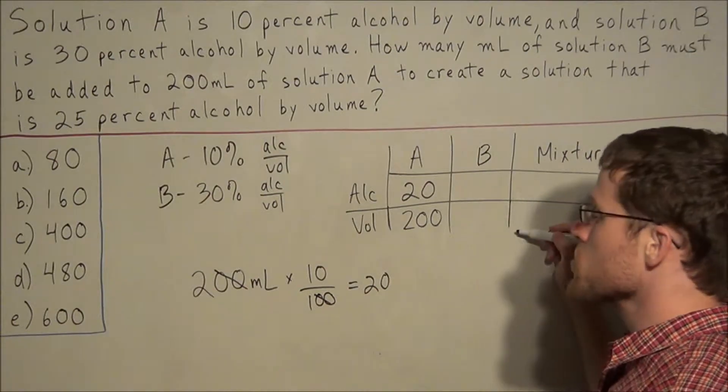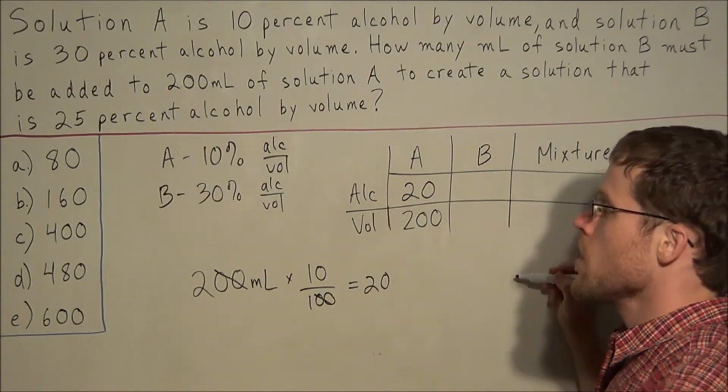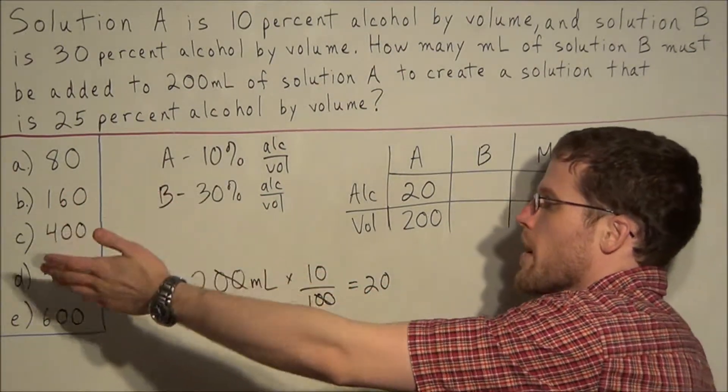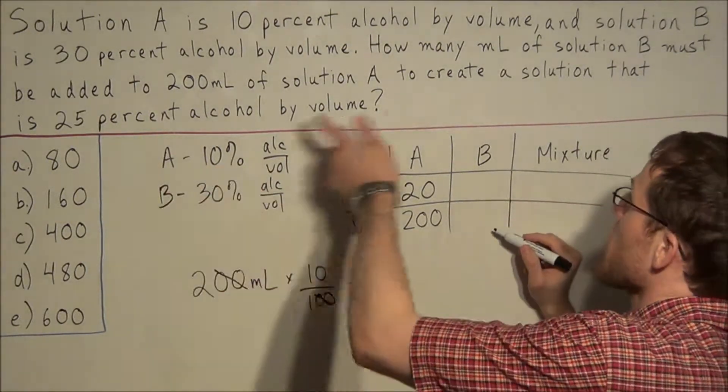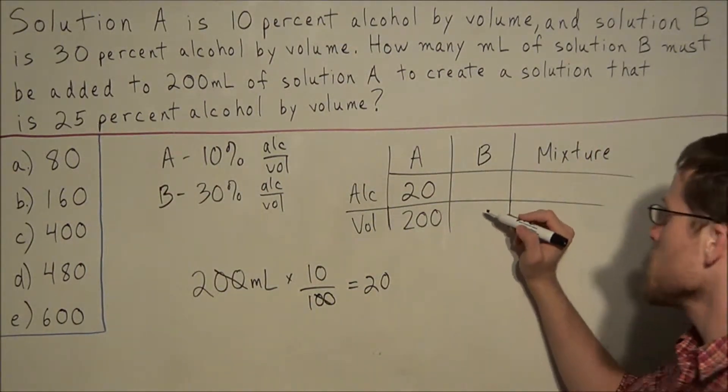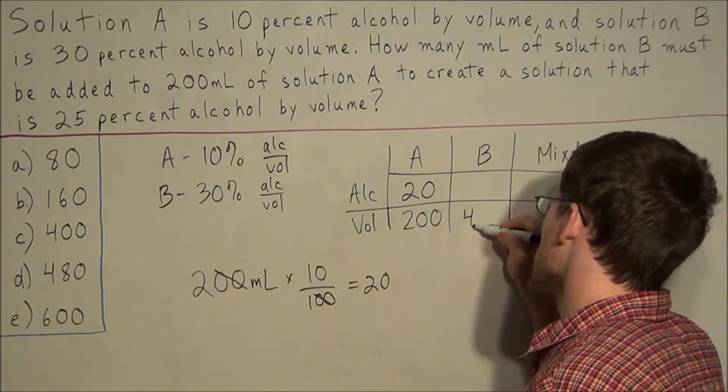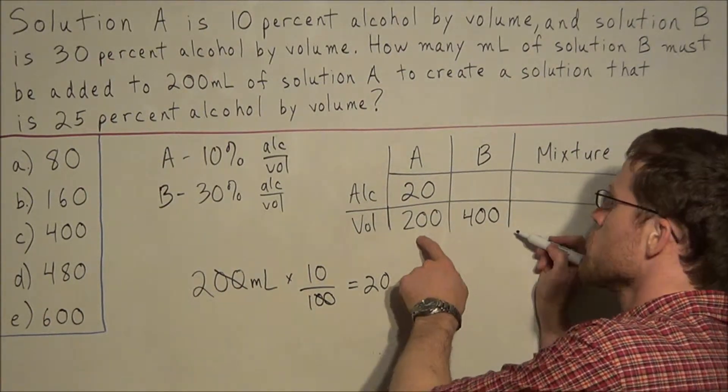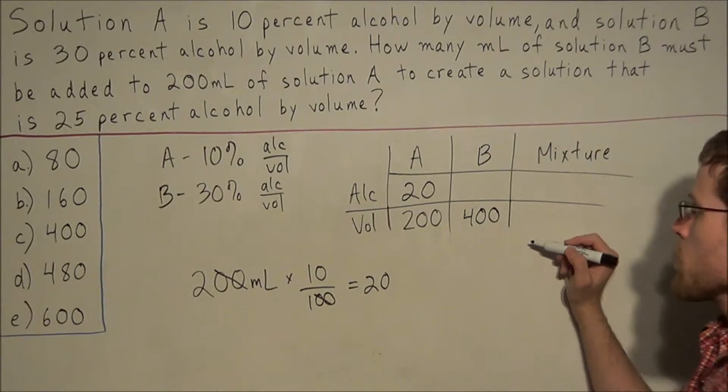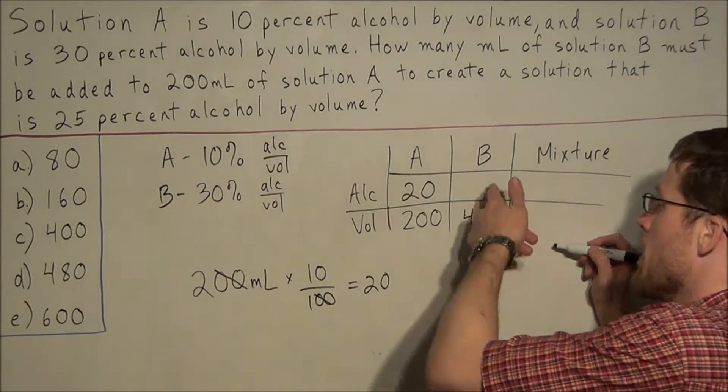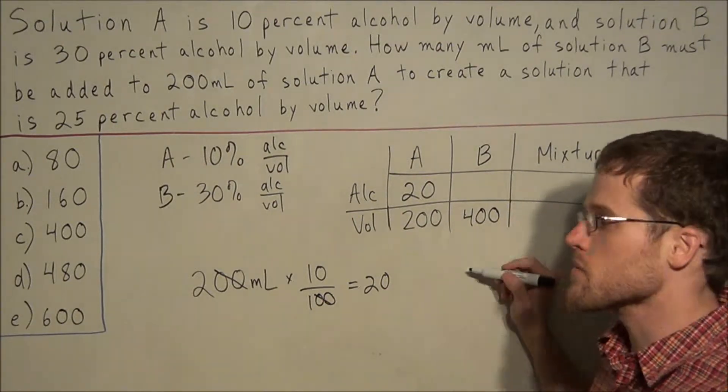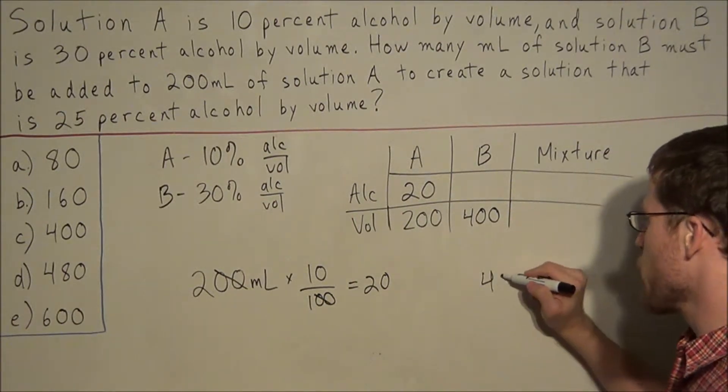Now what we can do is we start trying out answer choices. Let's say we were to try out answer choice C. We said that we are going to add 400 milliliters of solution B to the 200 milliliters of solution A. Well then what we would need to calculate is the amount of alcohol in 400 milliliters of solution B.